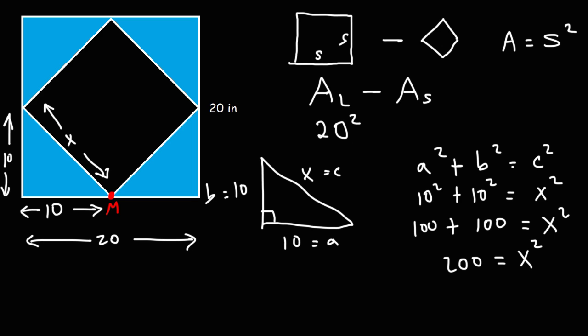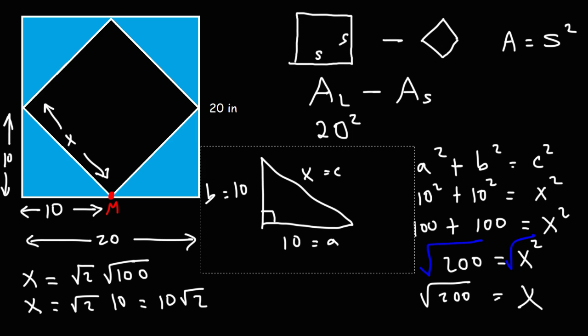What is the value of X? To change X squared into X, we need to take the square root of both sides. The square root of X squared is X, and that equals the square root of 200. Now we need to simplify the square root of 200. 200 is 2 times 100. The square root of 100 is 10, so X equals 10 root 2.